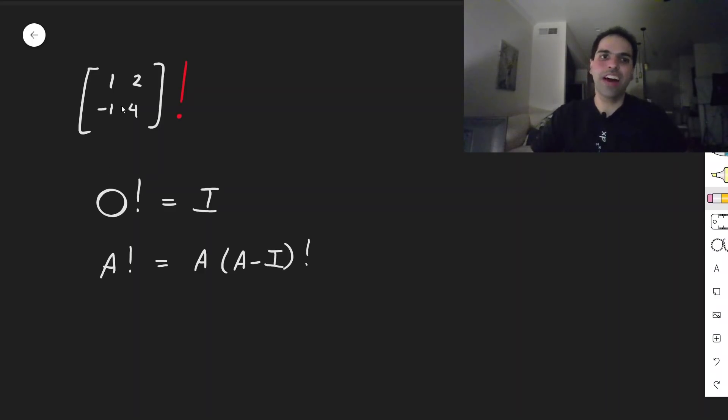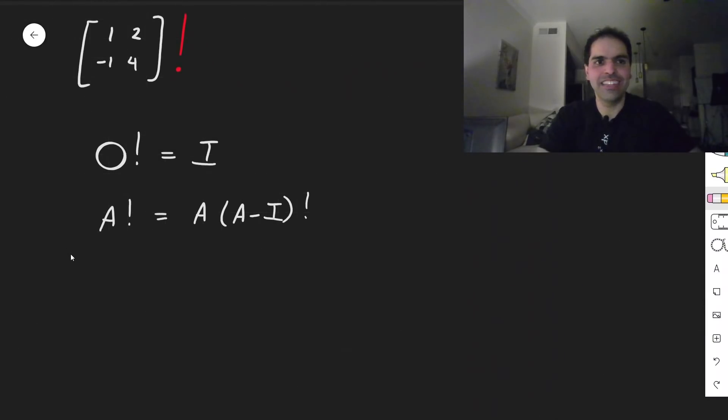And so now, in order to calculate this, let's think how to do this. Well, there is one very useful method to calculate weird functions of matrices, which is diagonalization. So let's try to diagonalize [1 2; -1 4].